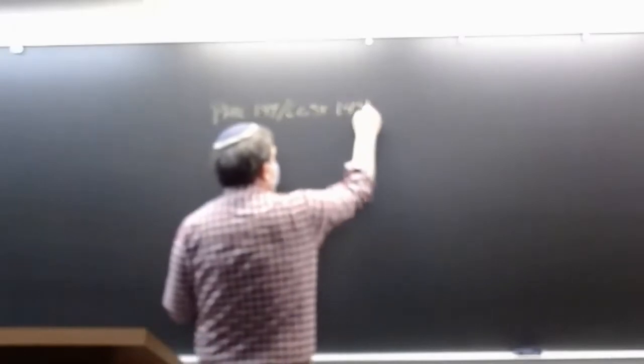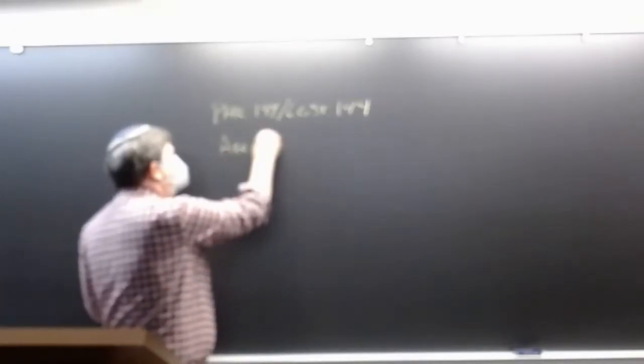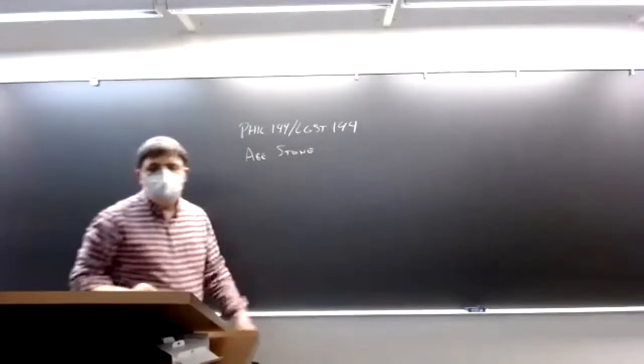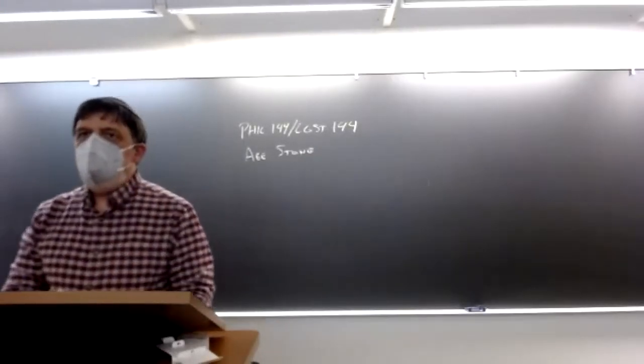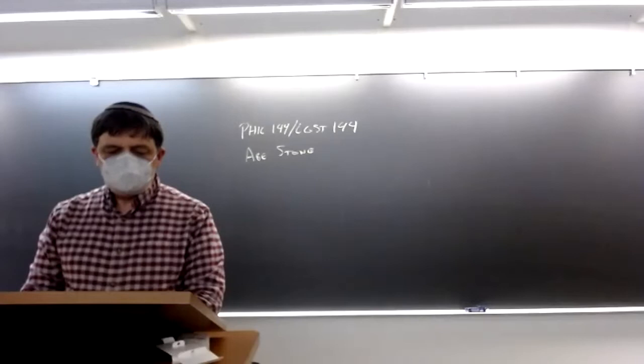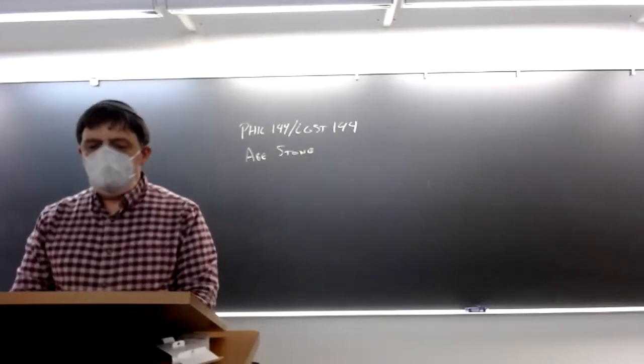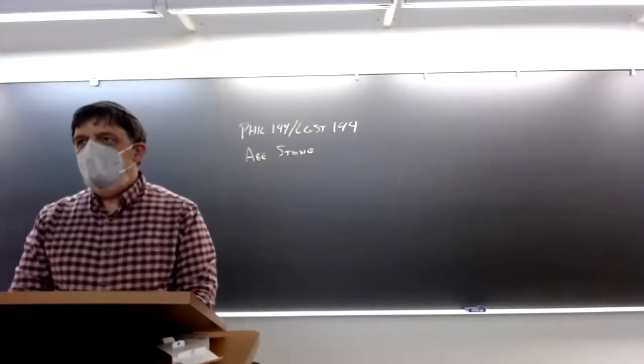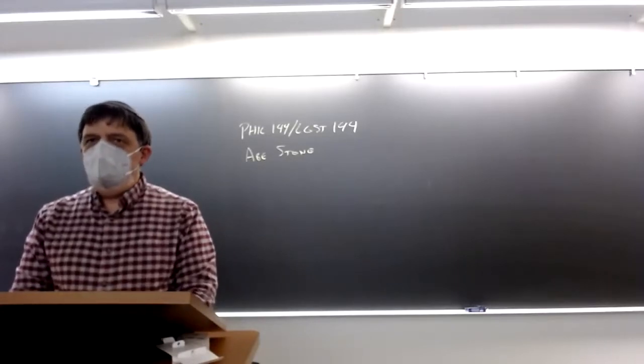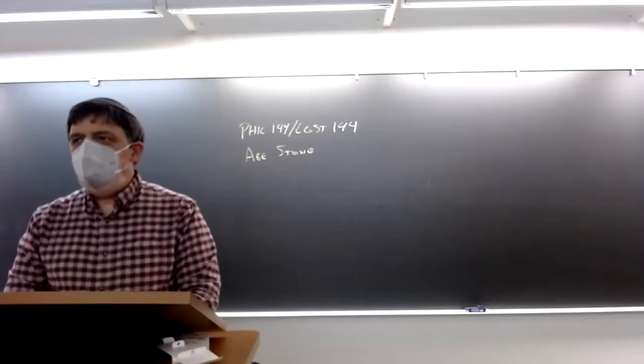This is Philosophy 144. I'm Abe Stone — you can call me Abe or Professor Stone, either way is totally fine. The official name of the class is Topics in Social and Political Philosophy, but I'm calling it Early Modern Political Philosophy because that is the topic.